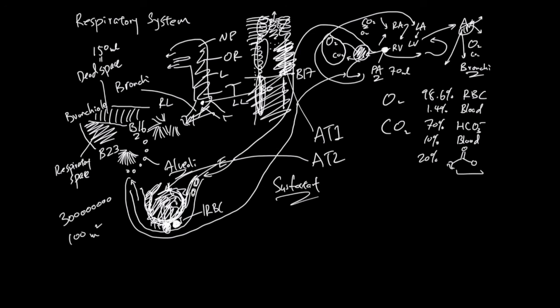And another function of AT2 is to actually differentiate and become the cells that make the alveoli. So AT2s are progenitor cells themselves.